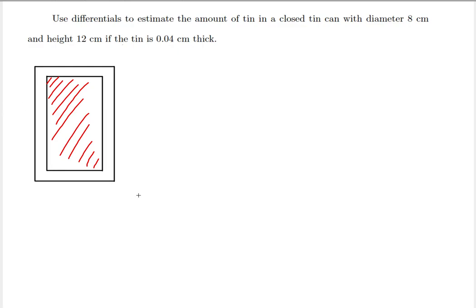So how do we proceed to find the additional volume aside from the empty can inside? We are going to use total differentials. First, we are going to write the volume formula of the empty can inside, which is going to be V = πr²h. Now we need to find the total differential — the change in volume.